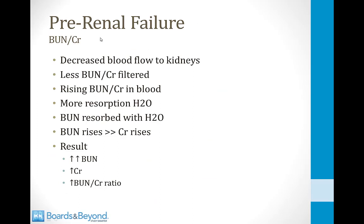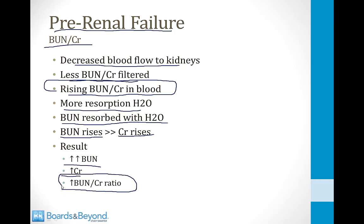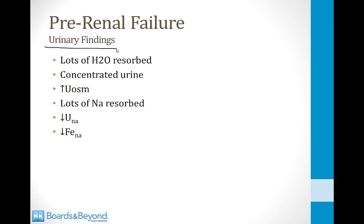In pre-renal failure, decreased blood flow causes less BUN and creatinine to be filtered, raising both in the blood. The kidneys perceive reduced delivery and reabsorb more water, pulling BUN out of the nephron with it — so BUN rises much more than creatinine, resulting in an elevated BUN-to-creatinine ratio. Urine shows high osmolarity, very low urinary sodium (less than 20), and low FENA (less than 1%).